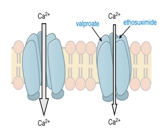Calcium influx is going on through high voltage-gated calcium channels, and also through low voltage-gated calcium channels. Ethosuximide and valproic acid have the capability of blocking low voltage-gated calcium channels.